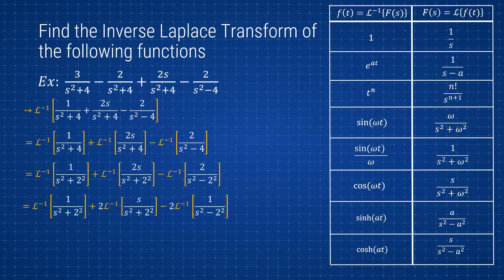Factoring out the coefficients, for the first term 1/(s²+2²) matches the sine form: the inverse Laplace of 1/(s²+ω²) is sin(ωt)/ω, where ω = 2. Then we have plus 2 times the inverse Laplace of s/(s²+2²), which matches the cosine form, again with ω = 2.